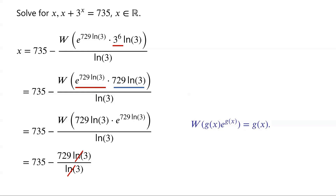ln(3) in the numerator and that in the denominator cancel. So x equals 735 minus 729, which is equal to 6.